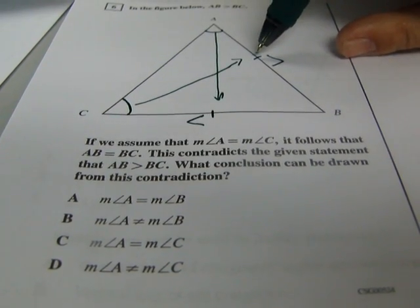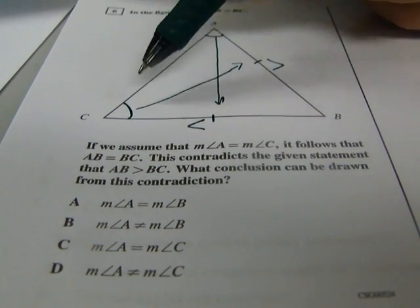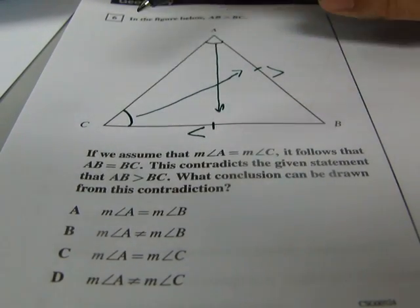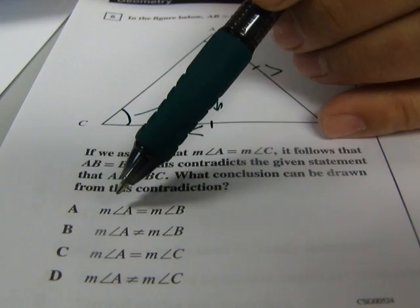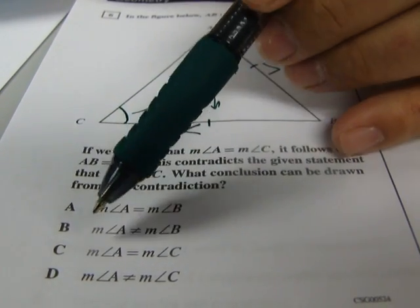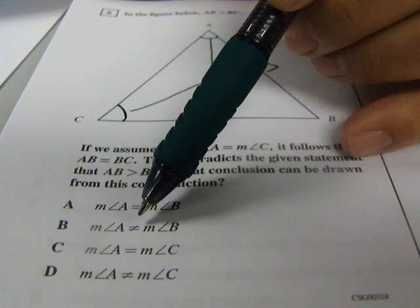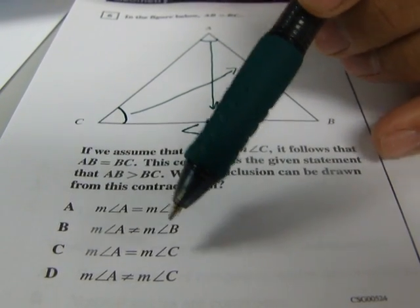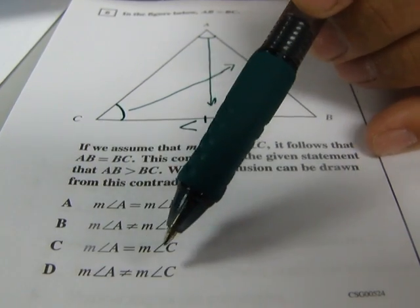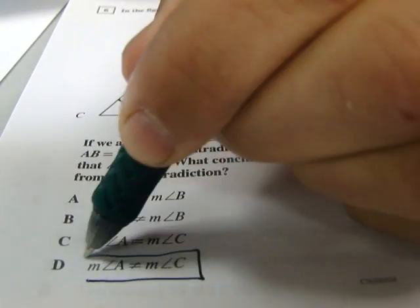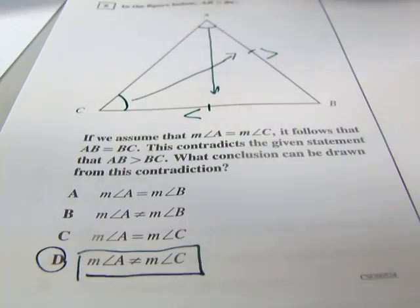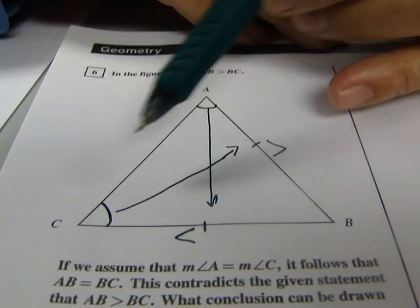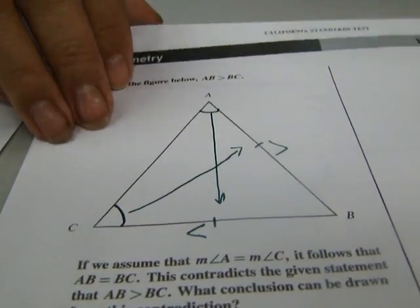What conclusion can be drawn? Well, if we know that the sides cannot be congruent, then we know that these angles also cannot be congruent. So the measure of angle A cannot be the same as the measure of angle C. And where do we see that? Measure of angle A equals measure of angle B. No, measure of angle A is not equal to measure of angle B. Measure of angle A equals measure of angle C, or measure of angle A is not equal to measure of angle C. We can conclude that measure of angle A cannot be equal to measure of angle C. Because if the sides are not congruent, then the angles cannot be congruent either. And that's it for number six.